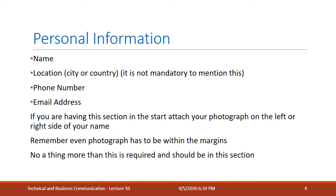The important thing to add under personal information is your photograph — a formal professional photo. It should be on the extreme right or extreme left of your CV, not in the middle. Some people prefer the left, some the right — both are fine. It should not be a selfie, not a group photo, and not something cropped from another photo. A good professional photo showing your entire face clearly — without a cap or anything covering your face — is more than sufficient. So personal information has five things: name, location, phone number, email address, and your photograph — nothing more.